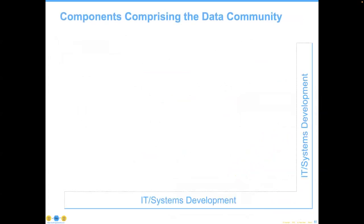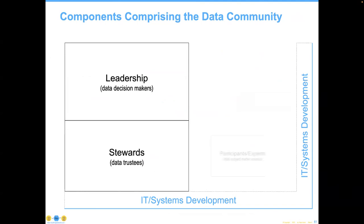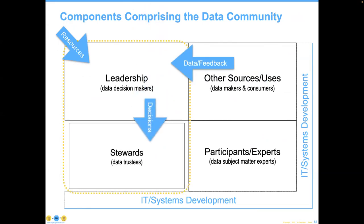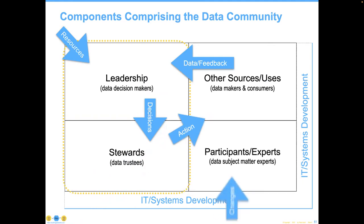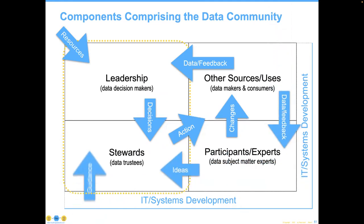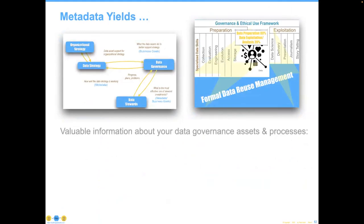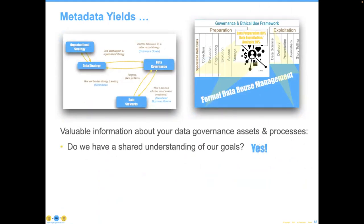When we look at what comprises the data community, IT and systems development are going to be there as supporting infrastructure legs. We've got a combination of leadership, stewards, some subject matter experts, and then everybody else. Most organizations will draw a line around the left-hand side of this diagram and say this is going to be our data governance operation. The purpose of leadership is to get resources, obtain feedback from people, and make decisions. The stewards are then charged with implementing those decisions. And once again, if we're doing this without talking about metadata, we are introducing more errors into the process instead of less. Our metadata here yields valuable information about the organizational data governance assets and process: do we have a shared understanding of our goals? Are we in IT focused on similar goals? How effective are we being?